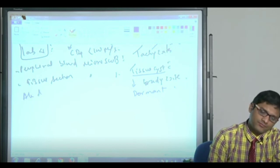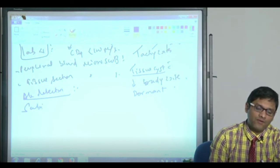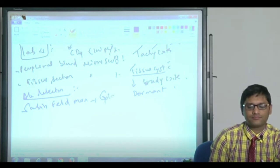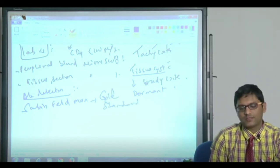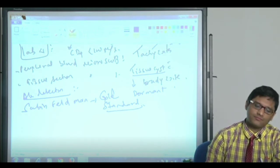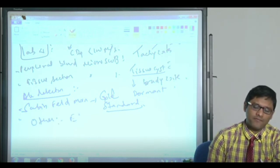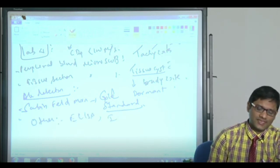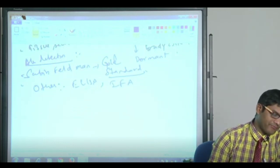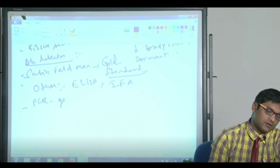Then antibody detection. They say that Sabin-Feldman test is the gold standard method, the gold standard method of diagnosis. Other than that, you have various antibody detection tests like ELISA, immunofluorescence assay, etc. Then of course, PCR can be done to detect the specific genes.